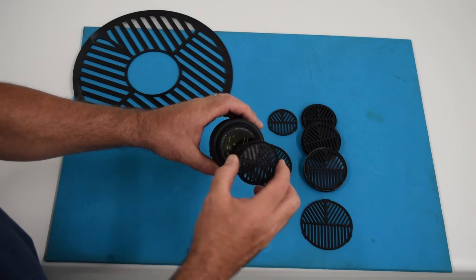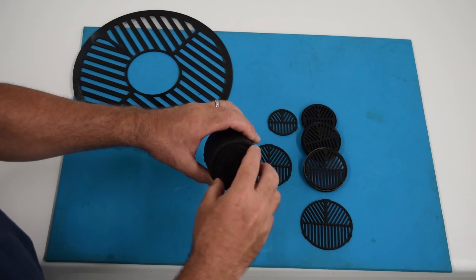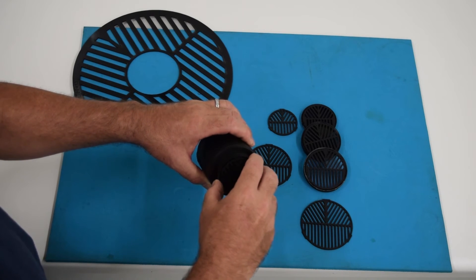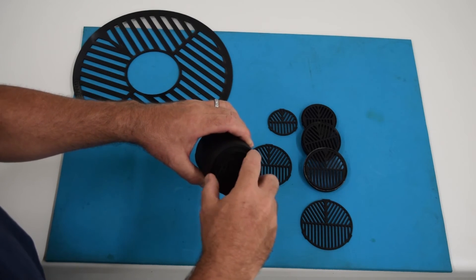And then you can take the second filter with the batten-off mask in it and screw it onto this first filter because they're stackable.